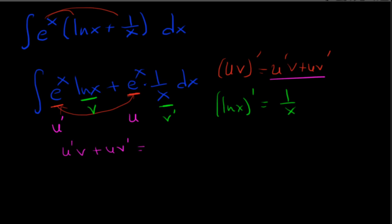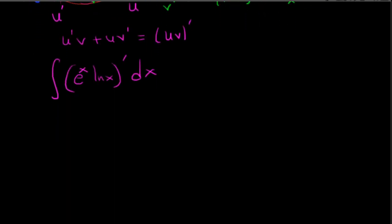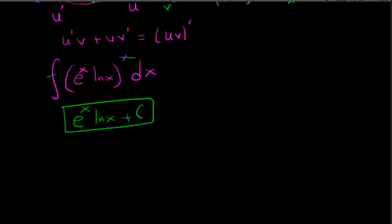We know that u prime v plus u v prime is the derivative of u times v. Here u is e to the x and v is ln of x. So we're taking the integral of a derivative, and those cancel each other out. We're just left with e to the x times natural log of x, and because it's an integral we add the constant, giving us e to the x ln x plus C as our answer.